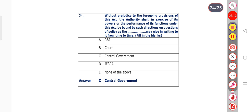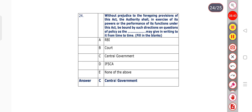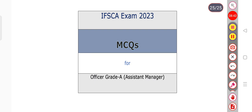Question number 24: Without prejudice to the foregoing provisions of this Act, the authority shall, in exercise of its powers or the performance of its functions under this Act, be bound by such directions and questions of policy as the [blank] may give in writing from time to time. Options: RBI, Court, central government, IFSC, or none of the above. Option C is the right answer — central government. I have prepared all 24 MCQs for you. This is all for now, thank you.